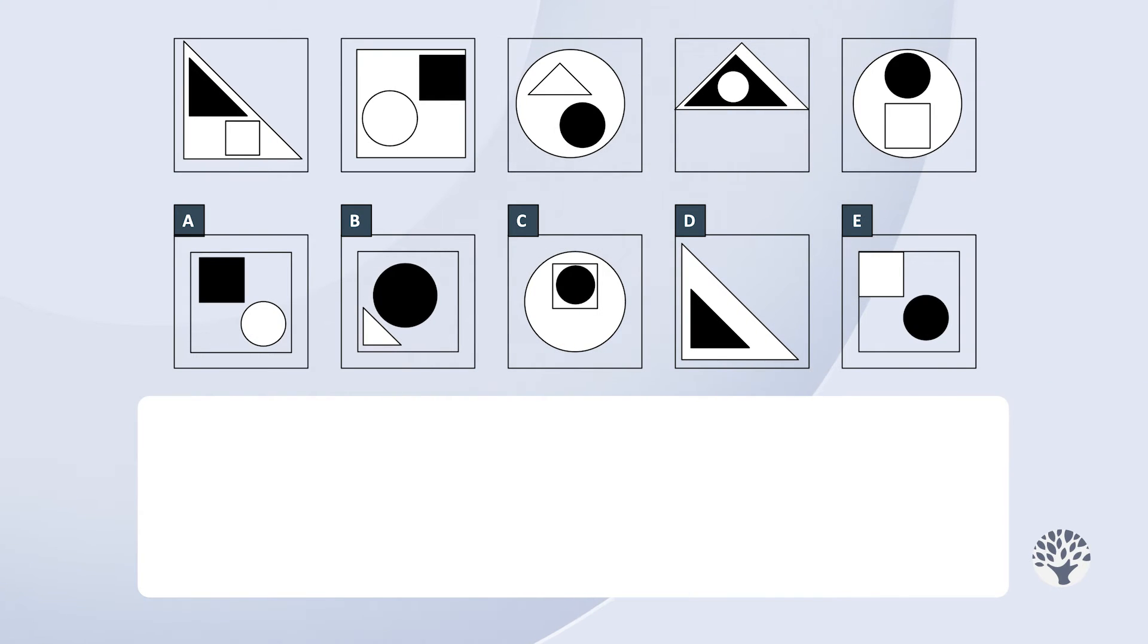We'll start by reviewing the frames at the top. We note that each frame has three shapes. There's a large white shape that contains two small shapes, a black one and a white one. That's our first rule.